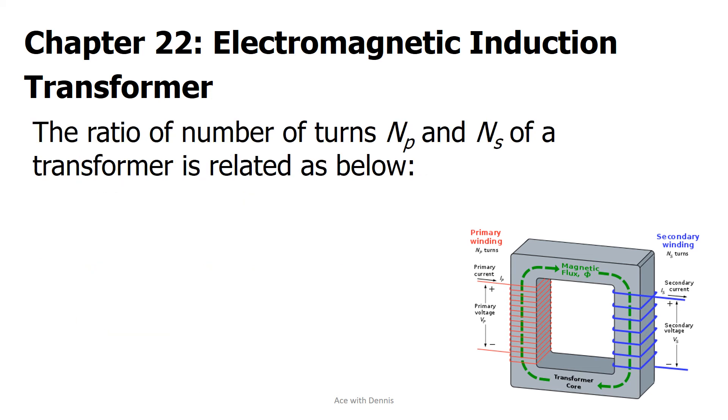The ratio of number of turns, Np and Ns, of a transformer is related as below: Np over Ns equals Vp over Vs equals Is over Ip.